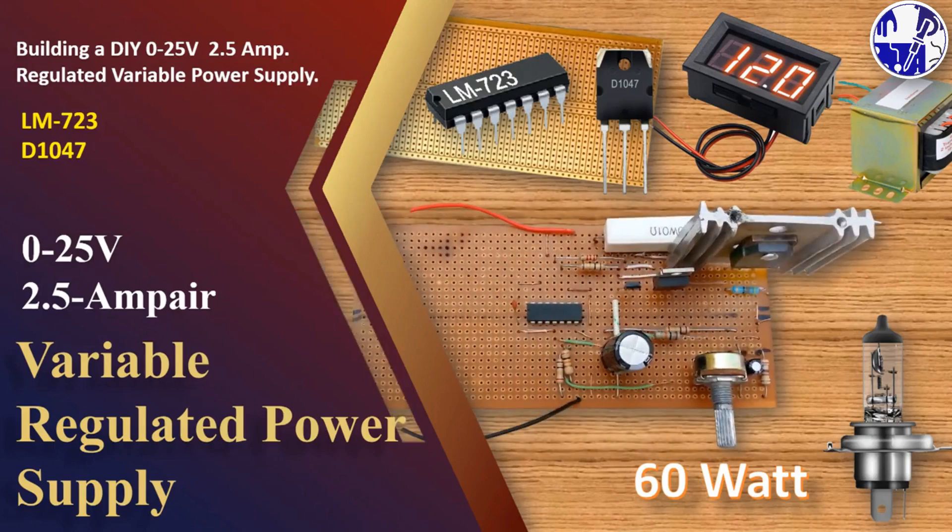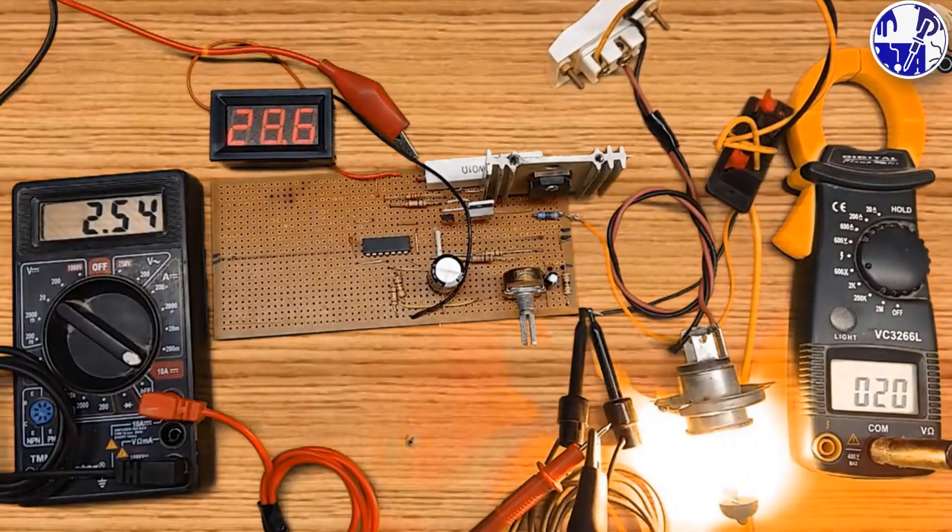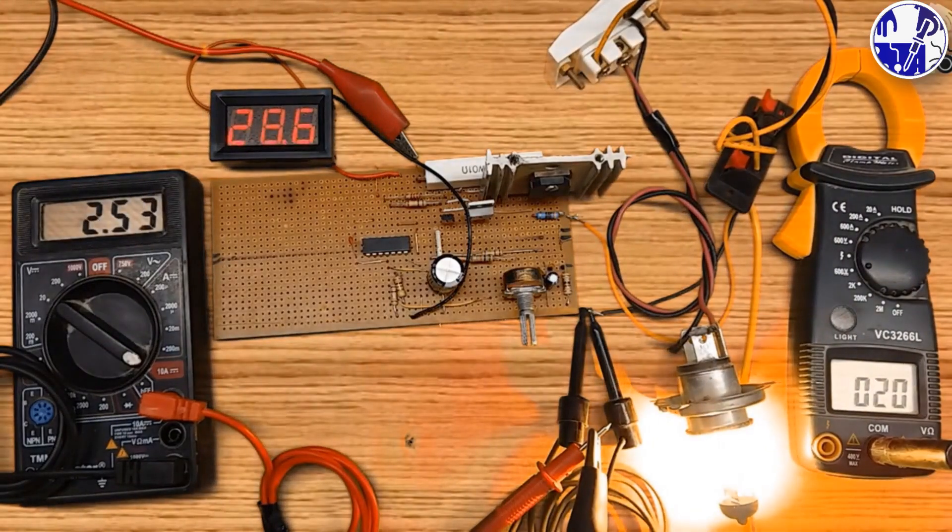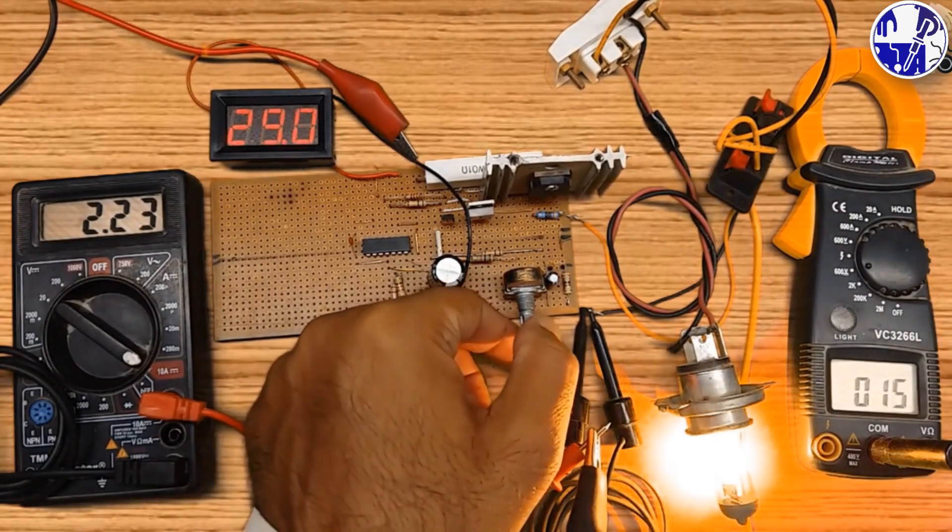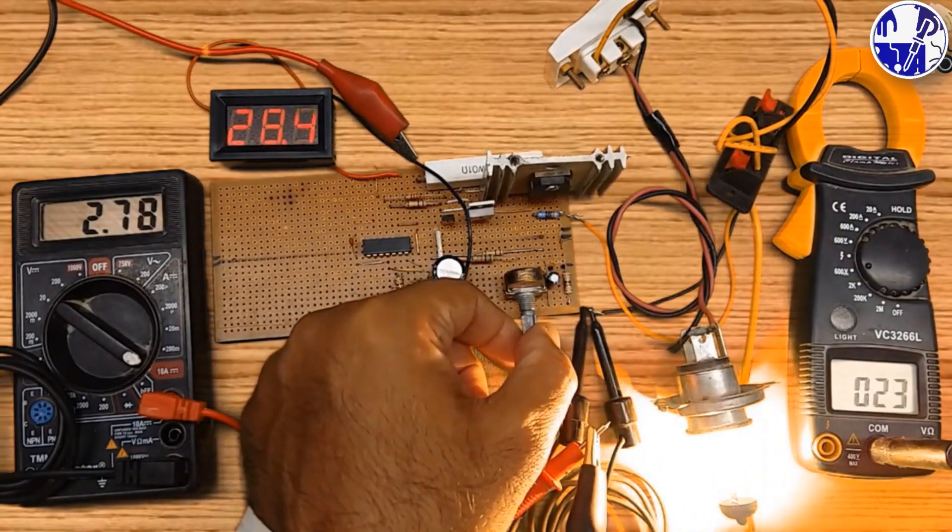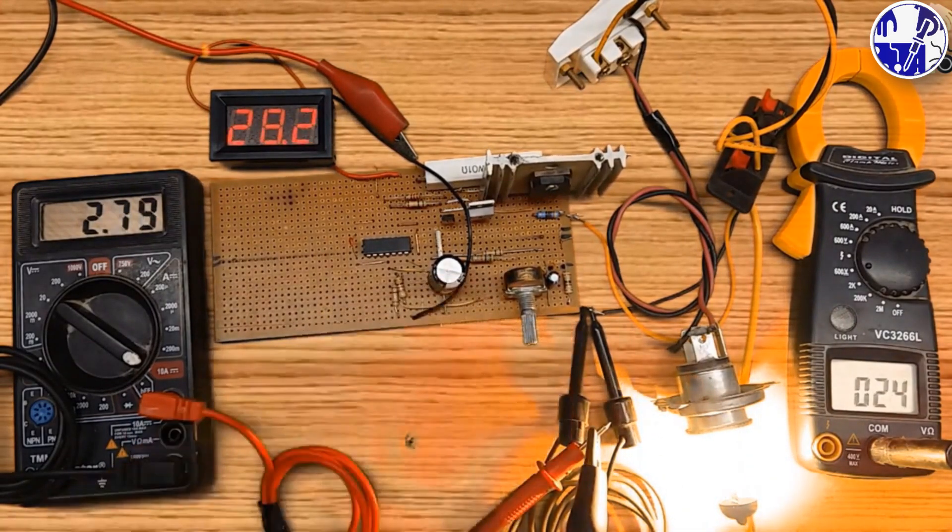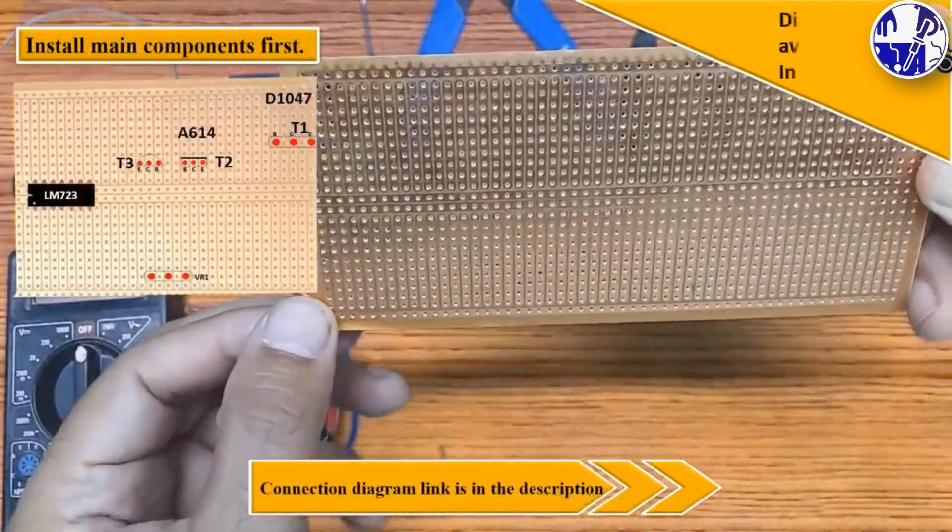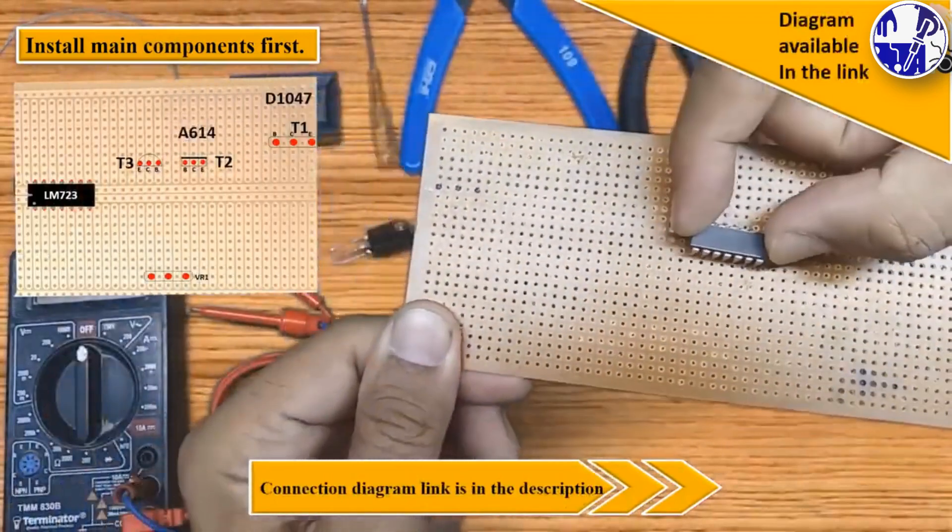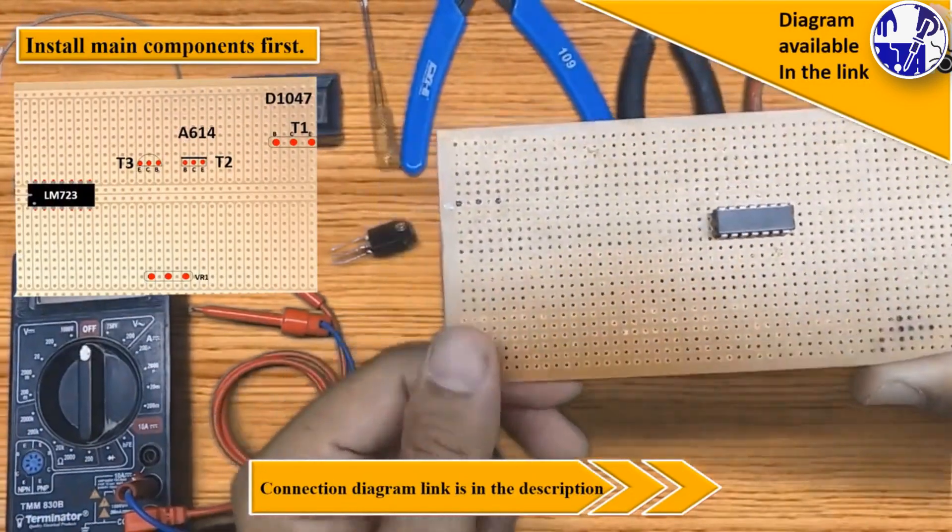This video demonstrates how to build an adjustable power supply that outputs 0 to 25 volts at 2.5 amperes. You will learn how to make your own adjustable power supply.